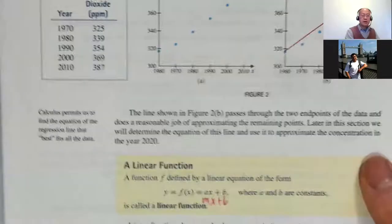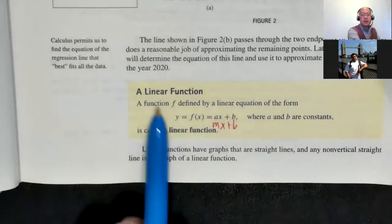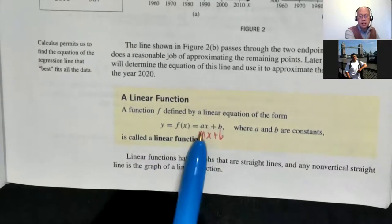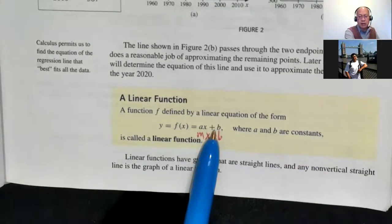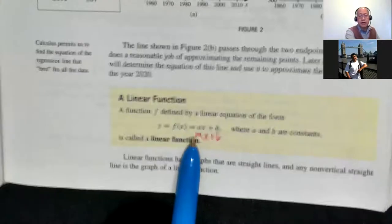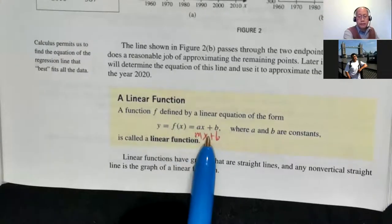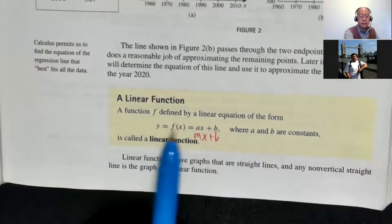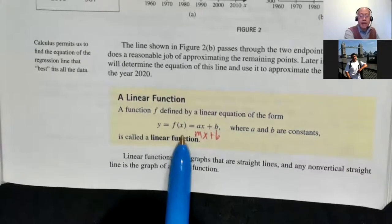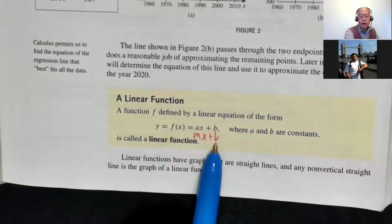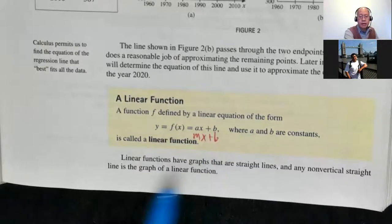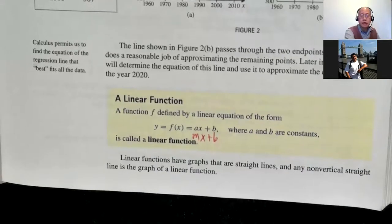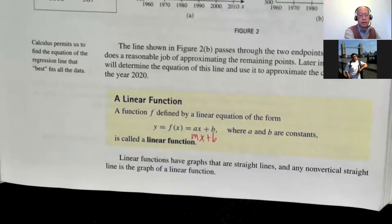Page 55. A linear function looks like y = f(x). The author uses ax + b, but I'm going to use mx + b because you're used to that — slope-intercept form. So if an equation looks like y = f(x) = mx + b, that's the slope m and y-intercept b. You may put that on your formula sheet, although technically you should already have it memorized.